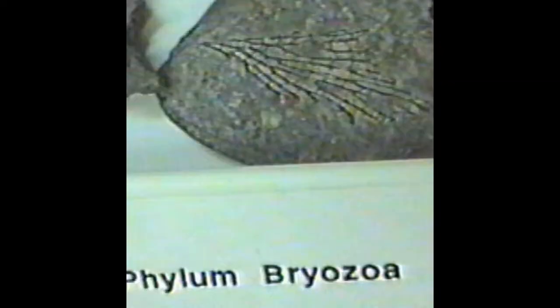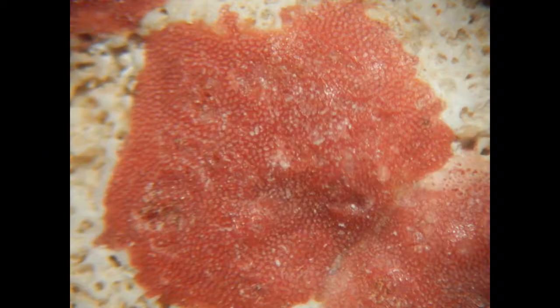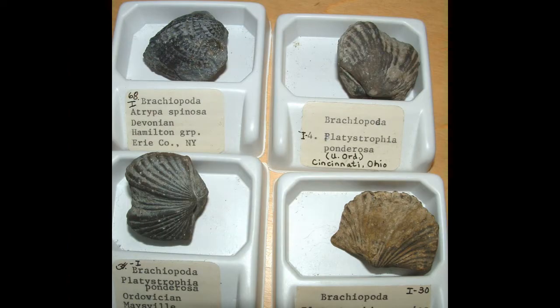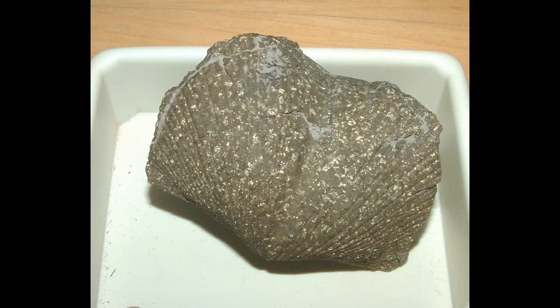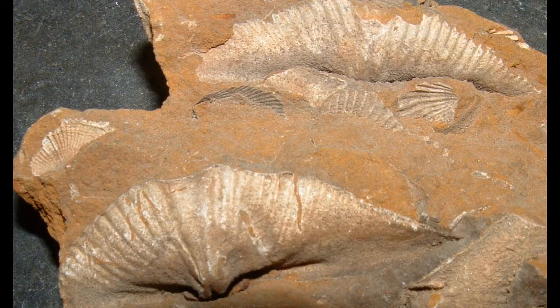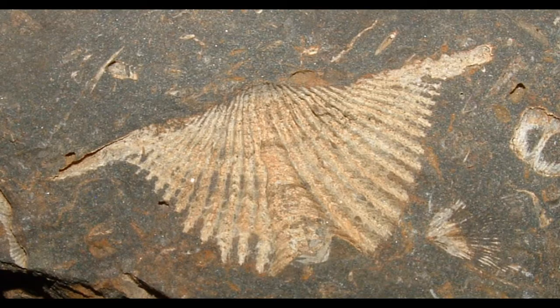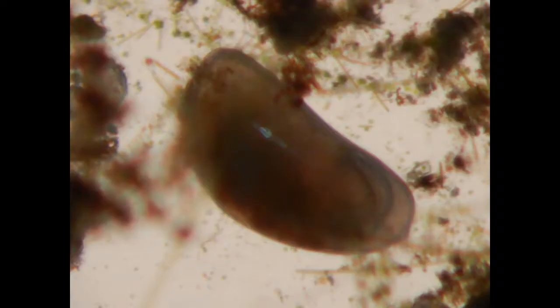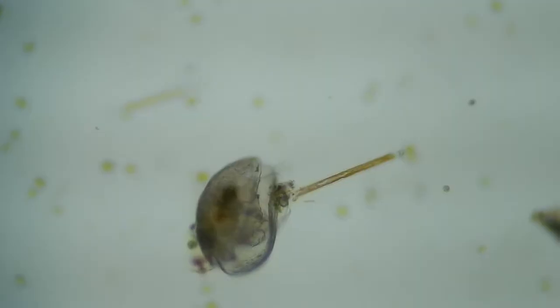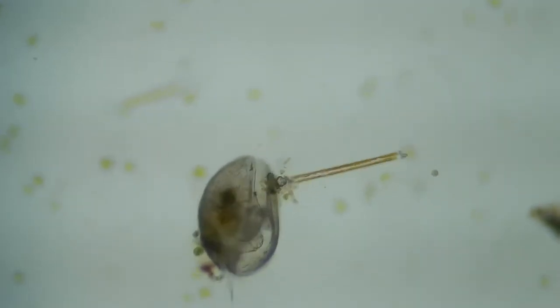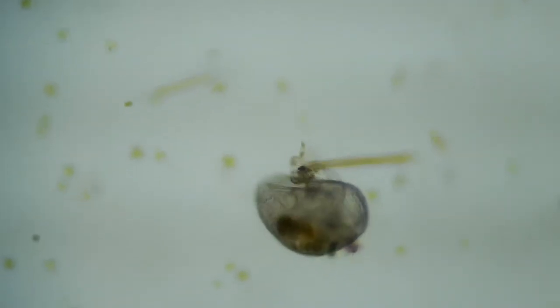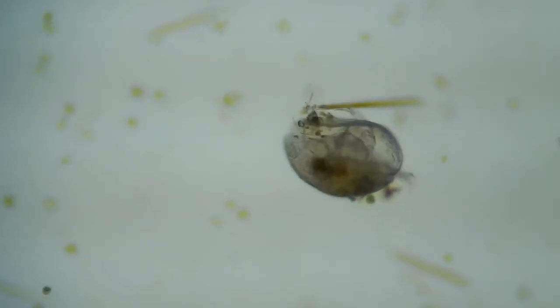Bryozoans are small colonial animals which can surround themselves in calcium carbonate. Brachiopods are a form of shellfish that were mostly dominant in the Paleozoic era and made shells of calcium carbonate. Small arthropods known as ostracods can also make shells of calcium carbonate and can be important in limestones formed in fresh water.